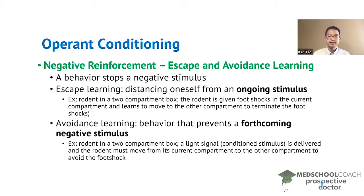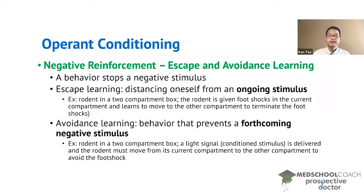In escape learning, you are going to distance yourself from an ongoing stimulus. There is nothing telling you the stimulus is coming — it has already happened. For example, you can have a rodent in a two-compartment box where it can move from one compartment to the other. The rodent is given a foot shock in whichever compartment it's currently in, and it has to learn to move to the other compartment to terminate the foot shocks — it is escaping the negative stimulus.